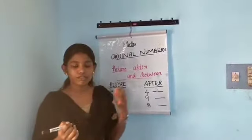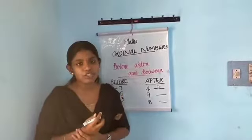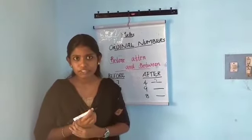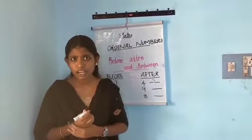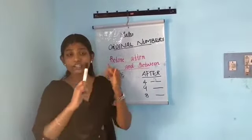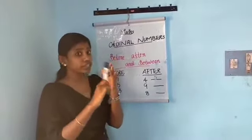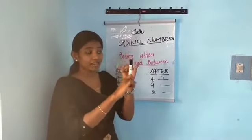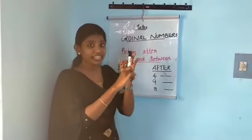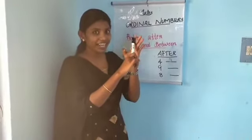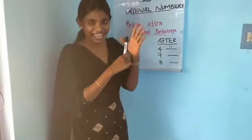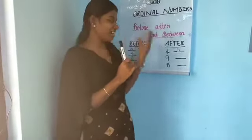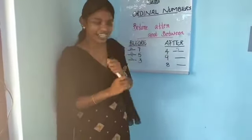What number comes after nine? Counting: one, two, three, four, five, six, seven, eight, nine — it is ten. So we write ten here.